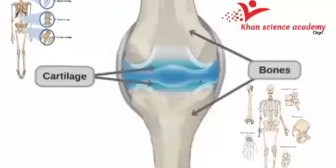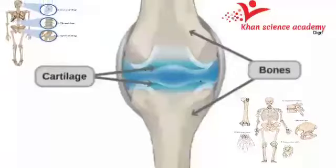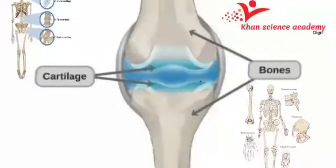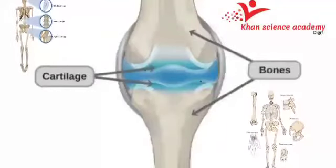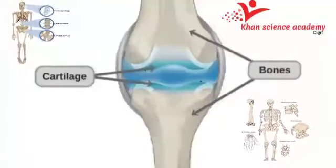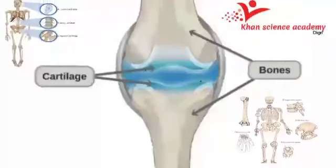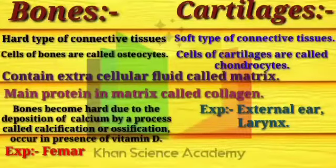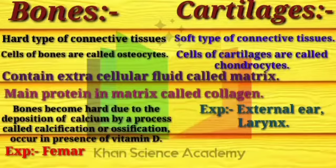Asalaamu Alaikum, I hope you all will be fine. Today our lecture is about bones and cartilage. The endoskeleton of vertebrates is made up of two types of connective tissues: cartilages and bones. Now we are going to discuss the difference between bones and cartilages.